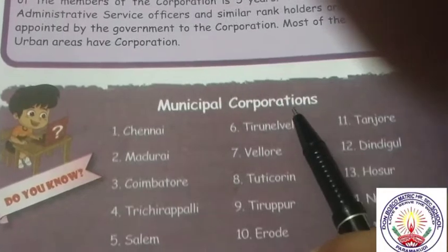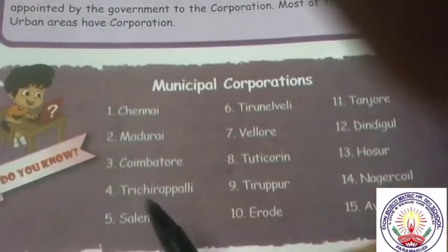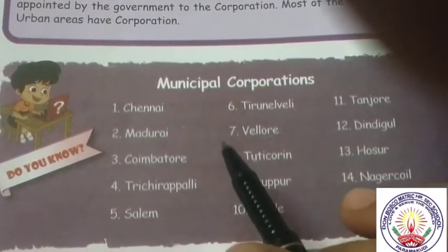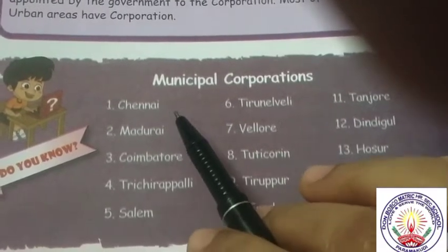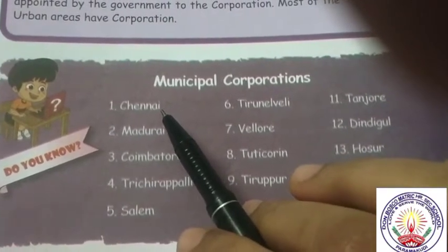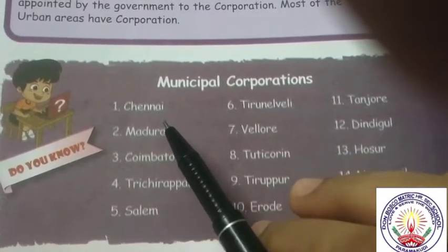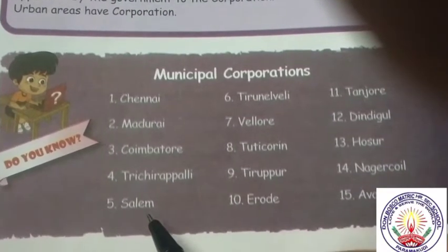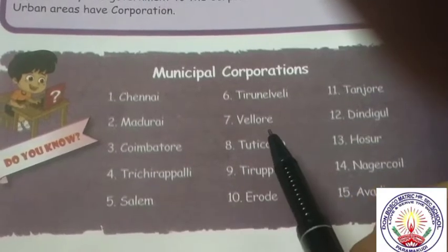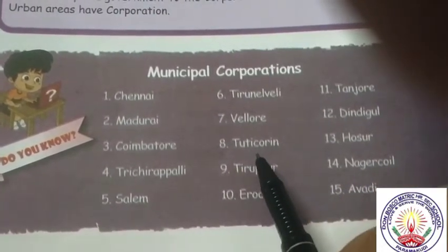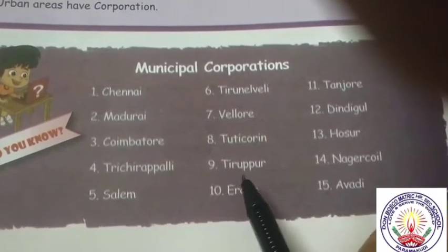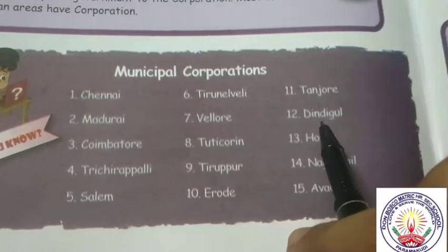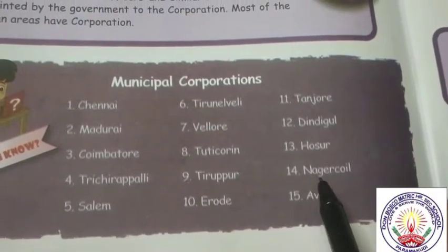Municipal Corporations in Tamil Nadu: we have 15 corporations. Chennai is the oldest corporation. The 15 corporations are: Chennai, Madurai, Coimbatore, Tiruchirappalli, Salem, Tirunelveli, Thoothukudi, Tiruppur, Erode, Thanjavur, Dindigul, and Vellore, among others.